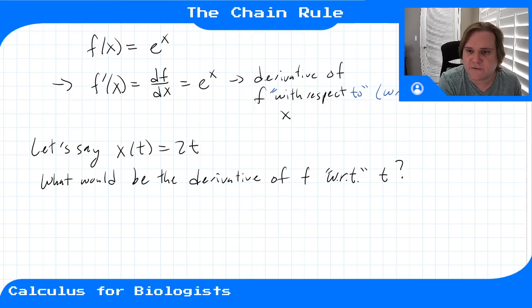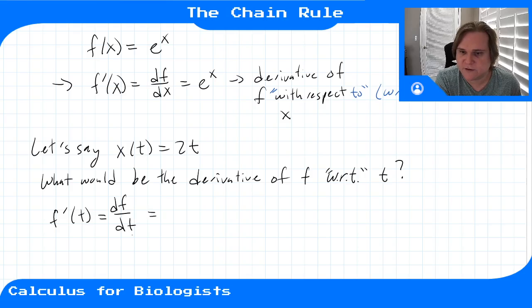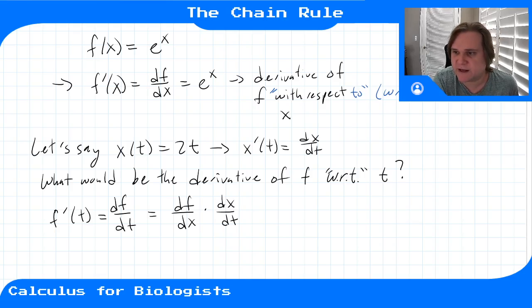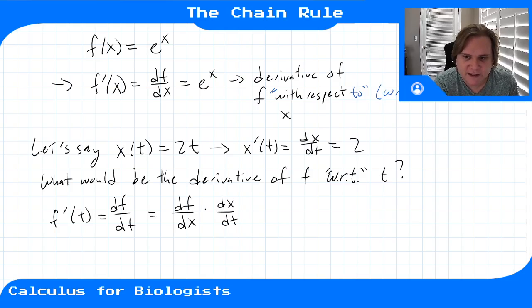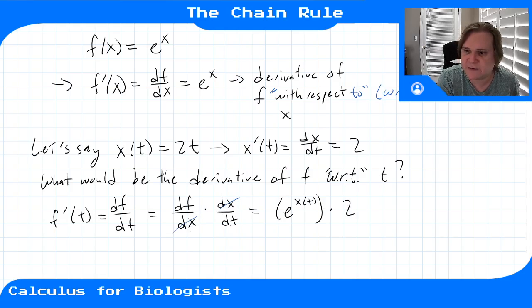We can compute this derivative by playing around with differential notation. So f prime of t, which is df/dt, equals df/dx times dx/dt. We know df/dx is e to the x, and dx/dt — the derivative of x(t)=2t with respect to t — is just 2, the slope of that line.